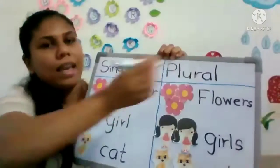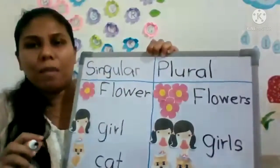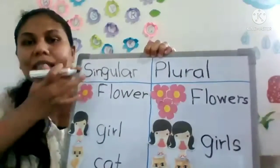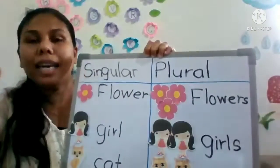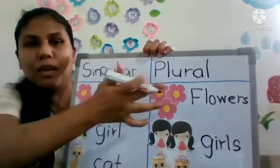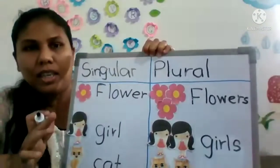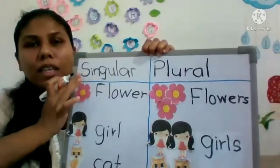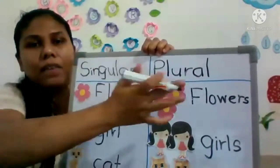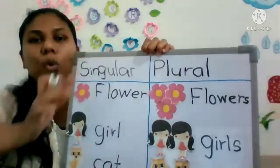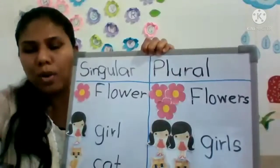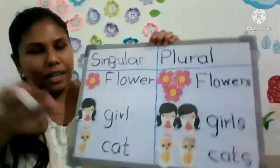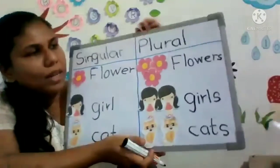Plural, plural. Plural, plural — vachana. Right? Singular — eka vachana. Plural — bahu vachana. Right? Alright.